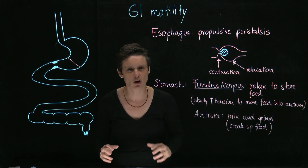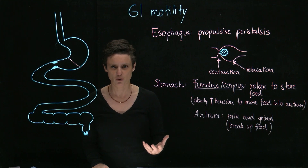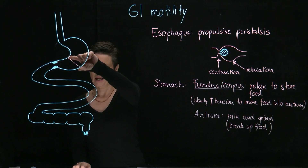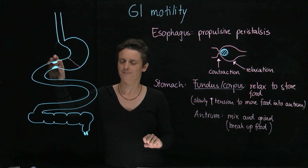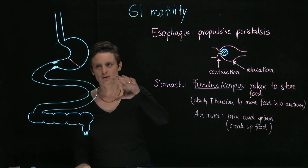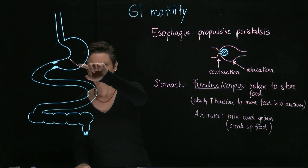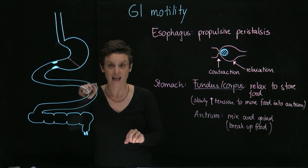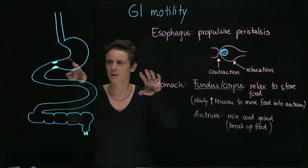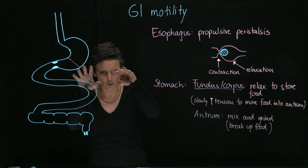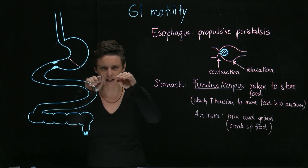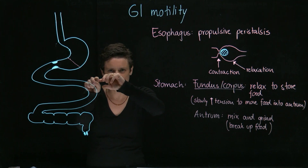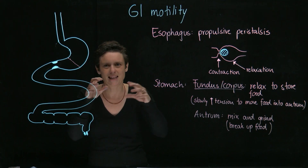The antrum is our master grinder — that's really where the food gets broken up. In the antrum we have a circular sphincter and then the pyloric sphincter. The circular sphincter moves very slowly forward and contracts, while at the same time the pyloric sphincter also contracts rather quickly. What happens is that all the food moves forward and then makes a slosh — it expels back — and that's what breaks up the food.